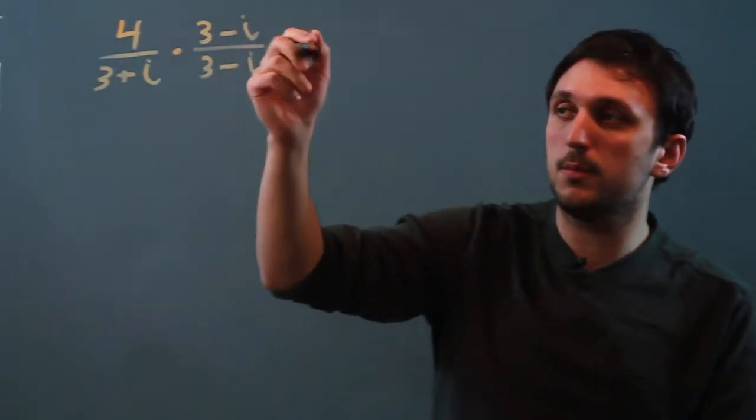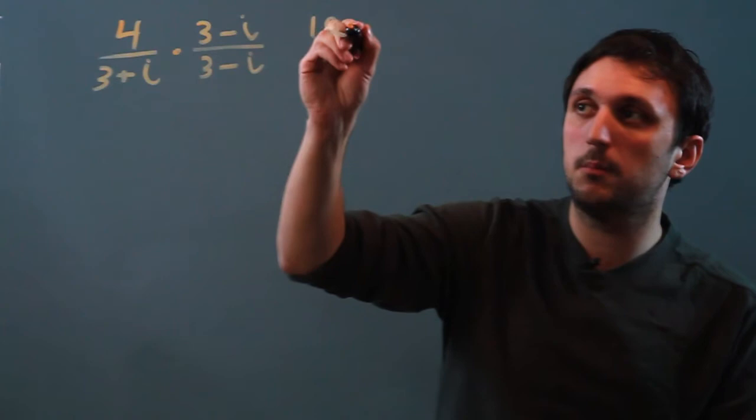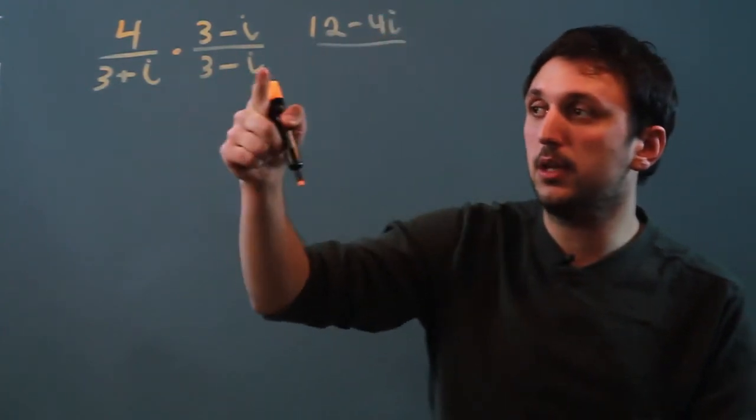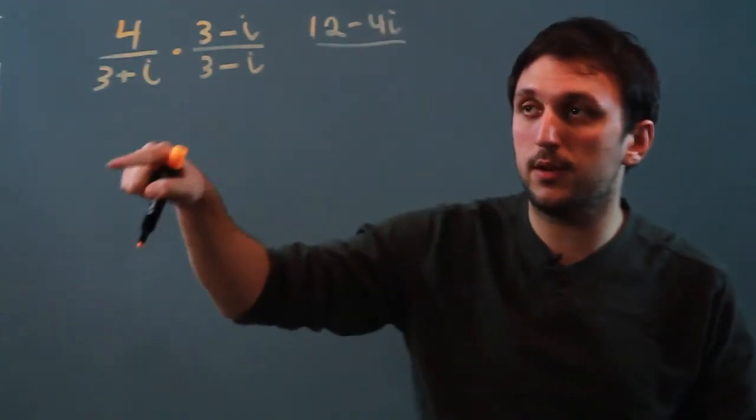So 4 times 3 minus i is 12 minus 4i. And then down here it's going to get a little messy. Let's do it down here and then bring it over.